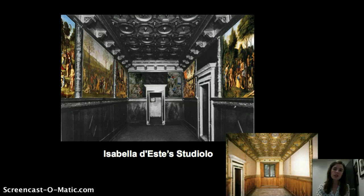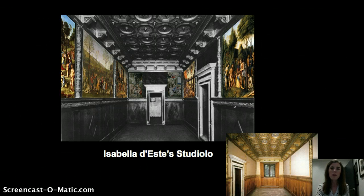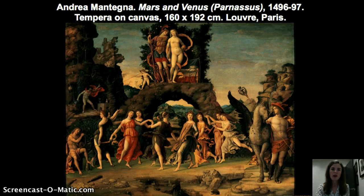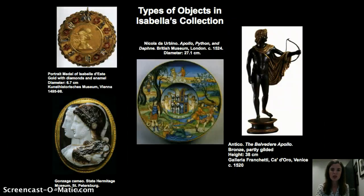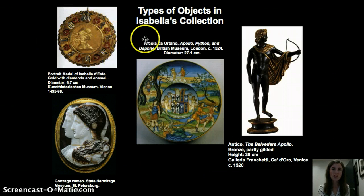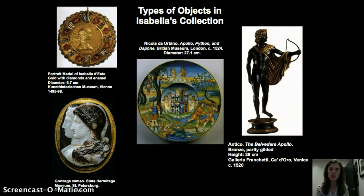Isabella had spaces for her collections — both paintings, sculptures, and art objects. She had her studiolo, which was adorned with paintings including paintings by Andrea Mantegna. She also had an area called the Grotto that included art objects. Here we see an example of the Andrea Mantegna Mars and Venus. She collected antiquities — this image gives a sense of the types of objects in her collection. She also collected bronze sculptures by Antico, a sculptor who created relatively small bronze sculptures based on ancient examples.